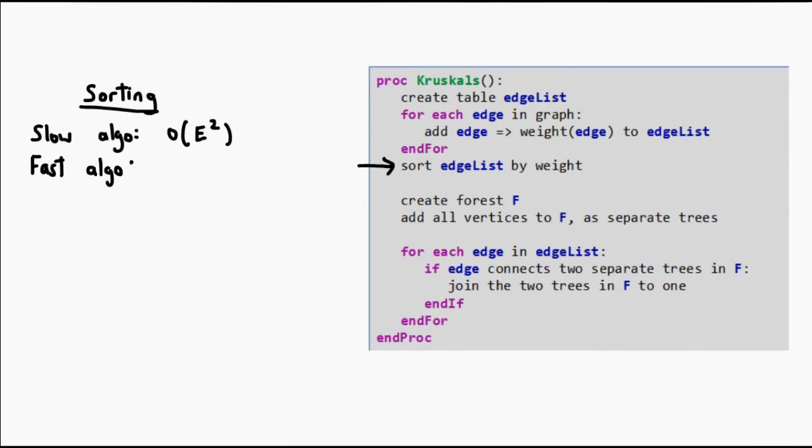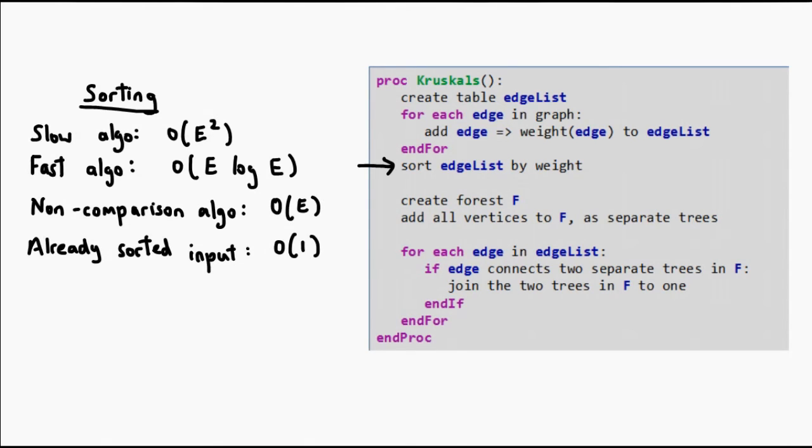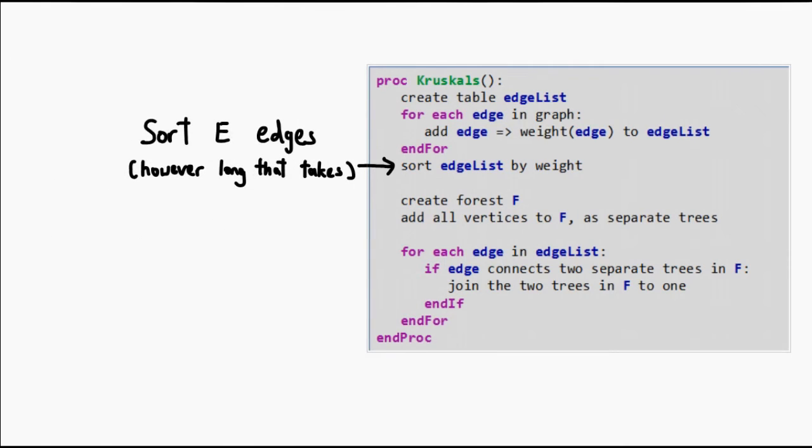Faster algorithms could take E log E, and perhaps we can even use faster algorithms. Or in the best case, our input has already been sorted, and this step can be entirely eliminated. So we don't actually know. Ultimately, at the end of the day, we just know we need to sort E edges, and express the time in terms of that.